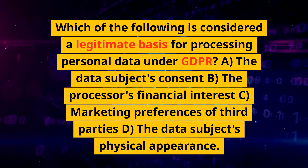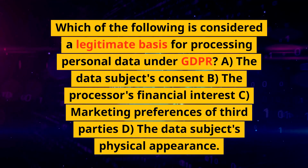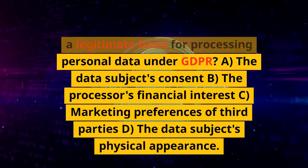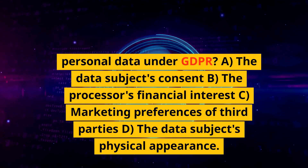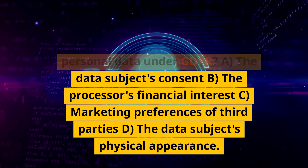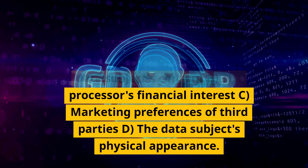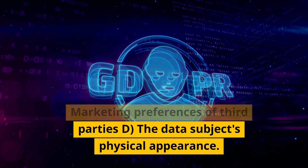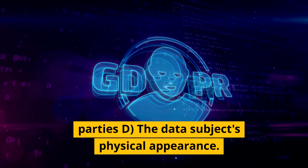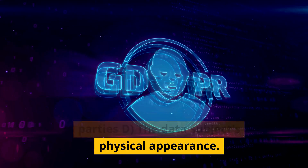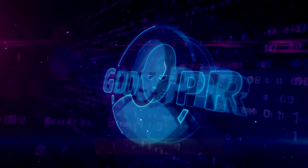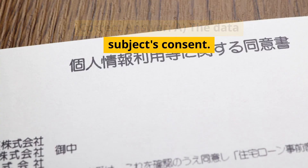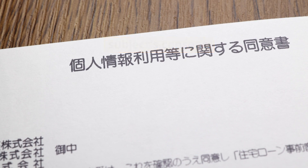Which of the following is considered a legitimate basis for processing personal data under GDPR? A. The data subject's consent. B. The processor's financial interest. C. Marketing preferences of third parties. D. The data subject's physical appearance. Correct answer: A. The data subject's consent.